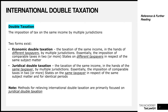Now let's come to juridical double taxation. Juridical double taxation is the taxation of the same income in the hands of the same taxpayer by multiple jurisdictions. Essentially, this is the imposition of comparable taxes in two or more states on the same taxpayer in respect of the same subject matter and for identical periods. For example, you go to Germany to work, you earn money there, Germany taxes you, you bring that money to Ghana and Ghana wants to tax you on that same money — that is juridical double taxation.